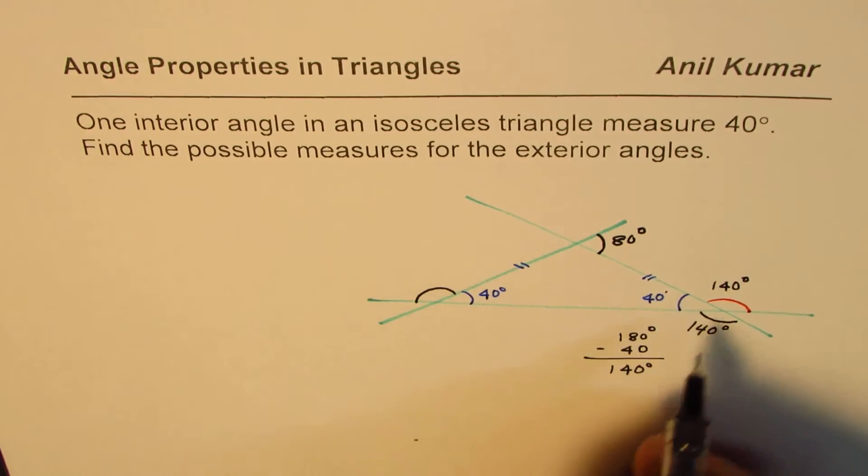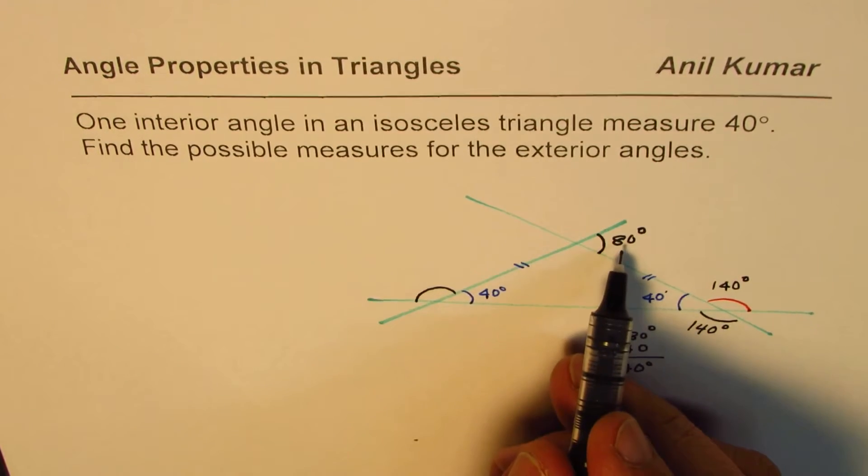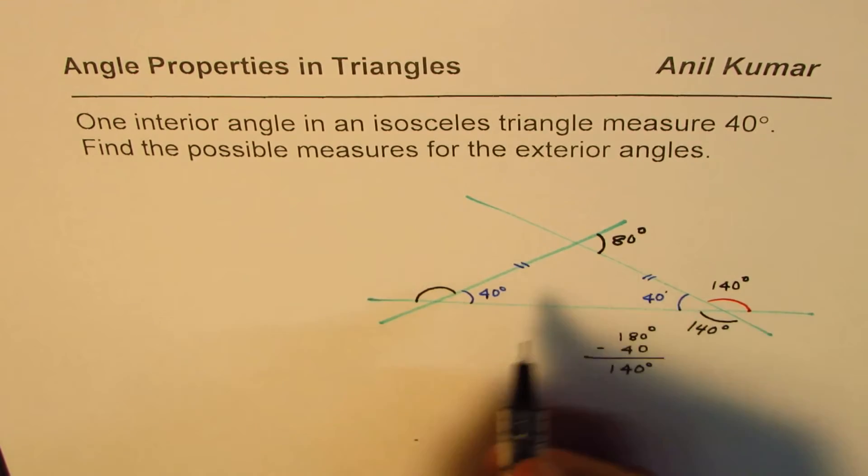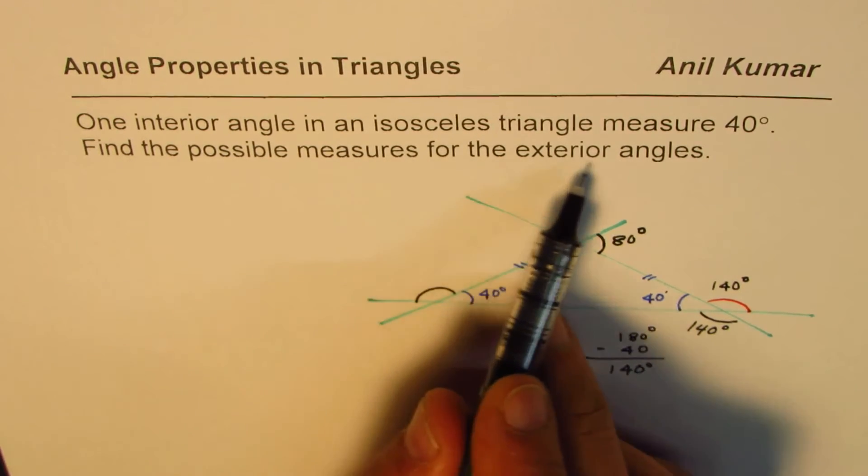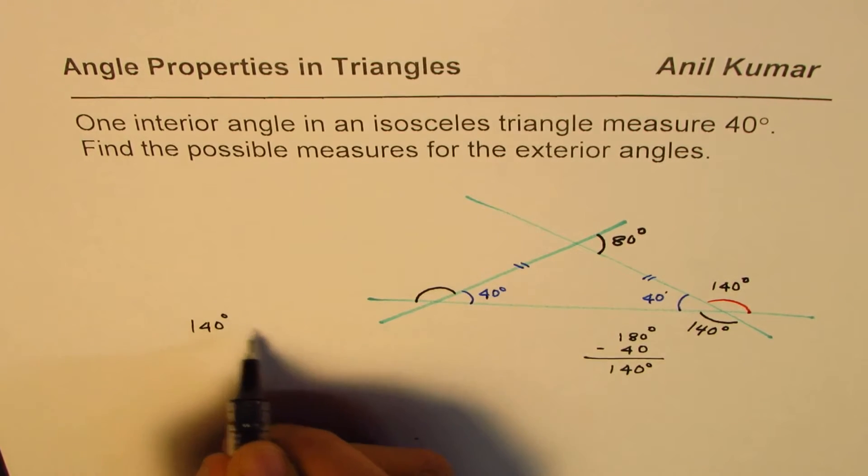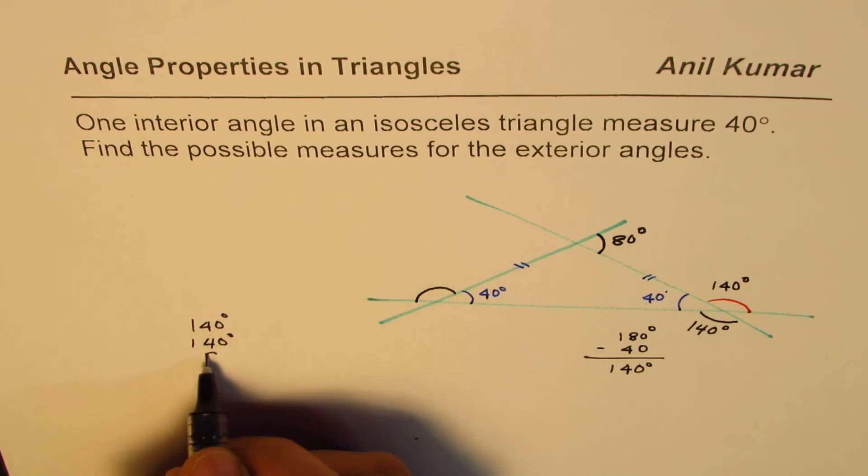Find the possible measures of exterior angles: they are 140 degrees, 140 degrees, or 80 degrees.